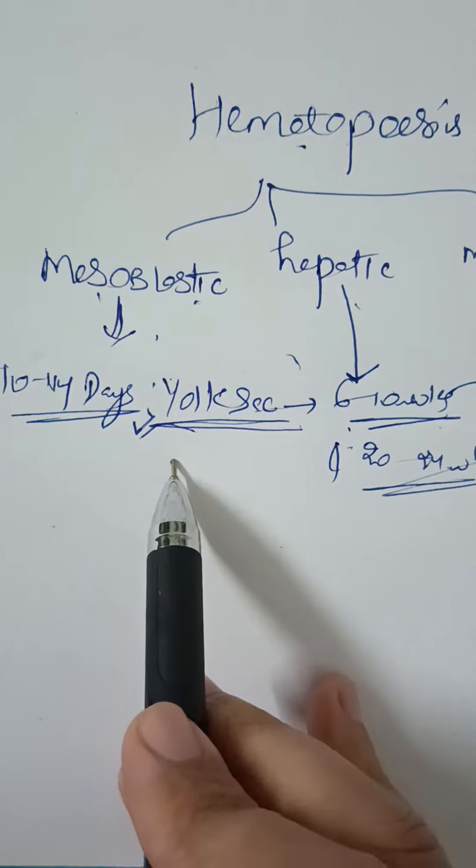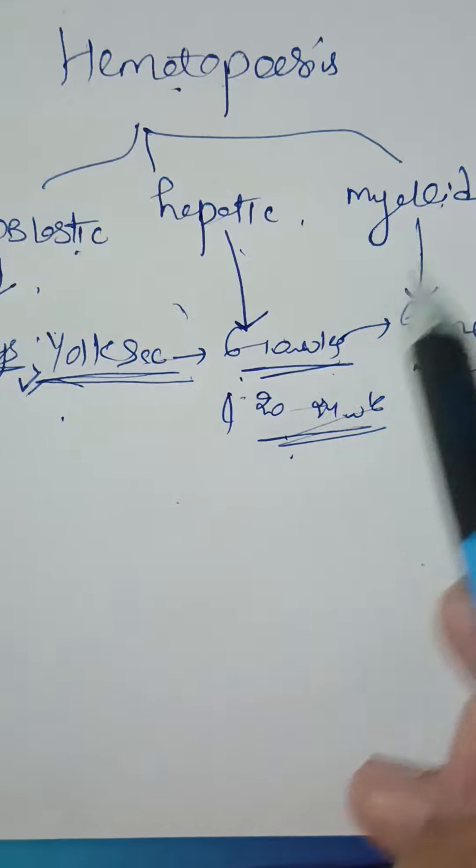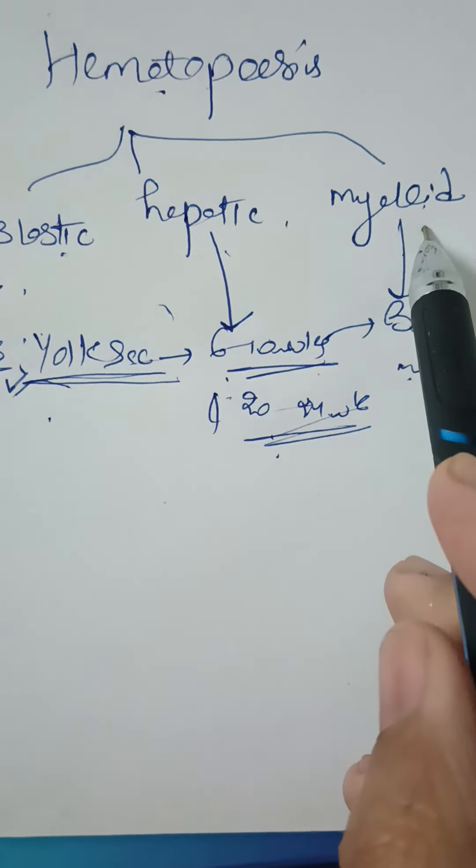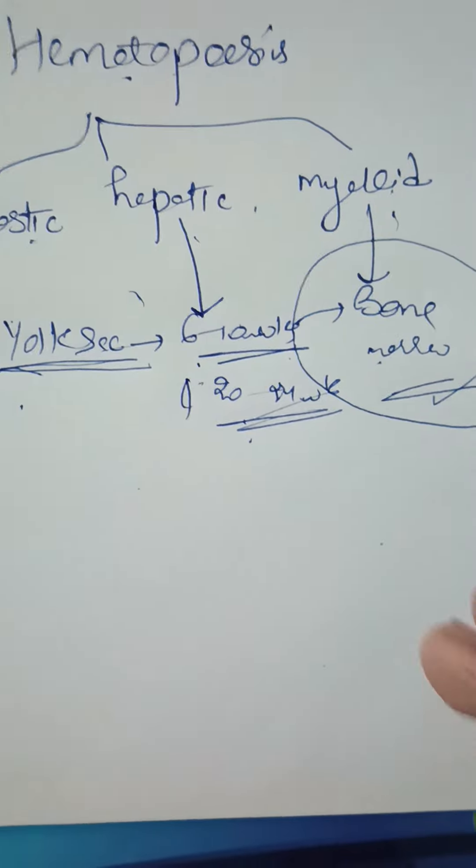Mesoblastic is the yolk sac, which is the first stage, followed by the hepatic stage, which occurs in the liver. Third is the myeloid stage, which occurs in the bone marrow and continues throughout life.